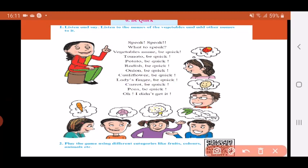Then carrot, be quick. Carrot is gajar. Peas, be quick. Peas means mutter. And now if you see the last person is saying oh I didn't get it. Means the last person couldn't be quick to think of the name of another vegetable. So the game gets over.